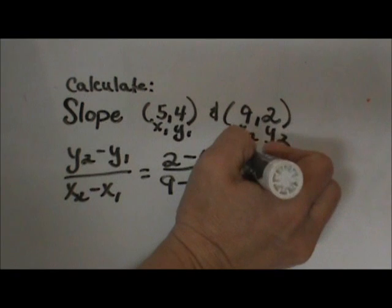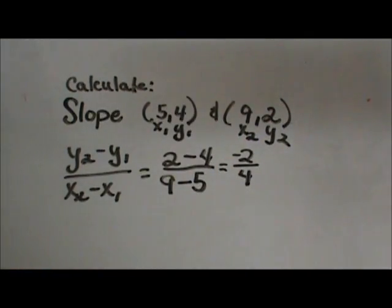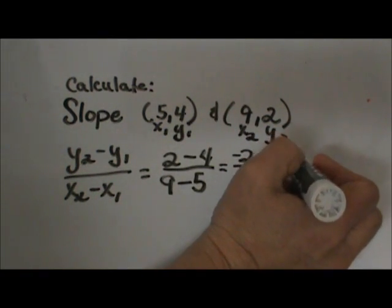2 minus 4 is negative 2. 9 minus 5 is positive 4. So I have negative 2 over 4, which reduces to negative 1 half.